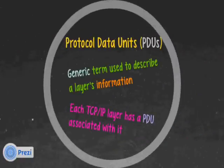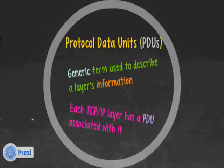Now each layer has something called a Protocol Data Unit, a PDU. It's a generic term used to describe a layer's information. Each layer has a PDU associated with it, and it gives us a way of describing specifically that information so we know we're talking about a specific layer.